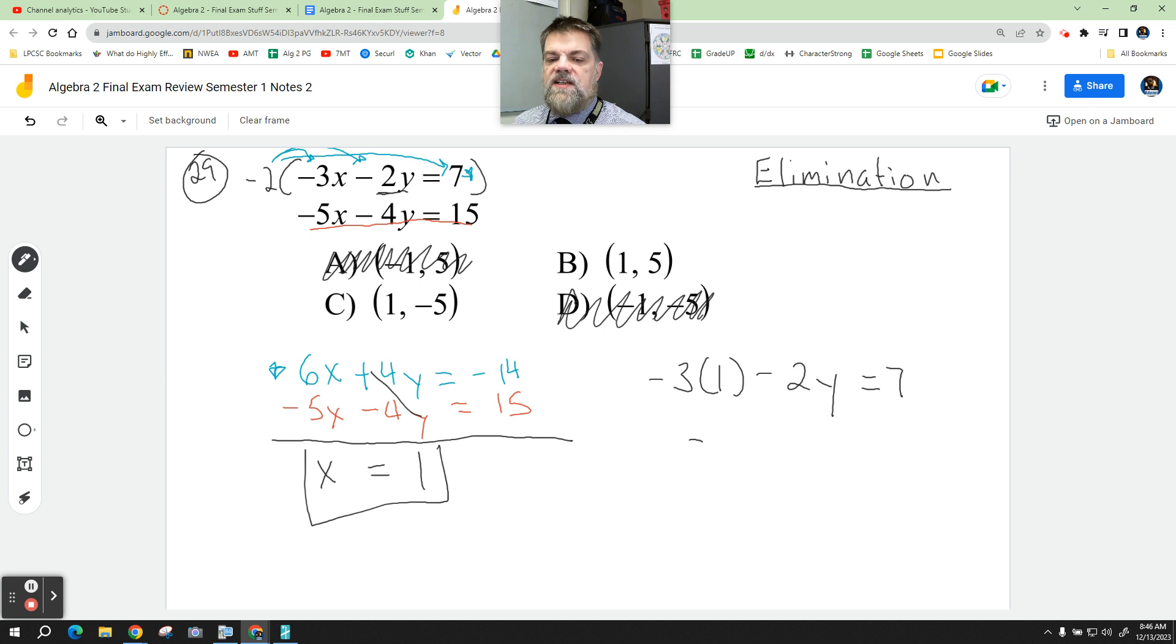Minus 2y equals 7. Negative 3 times 1 is negative 3. Minus 2y equals 7. I'm going to add 3 to both sides to solve. And I get negative 2y is equal to 7 plus 3, which is 10. Divide both sides by negative 2. And I get y equals negative 5.